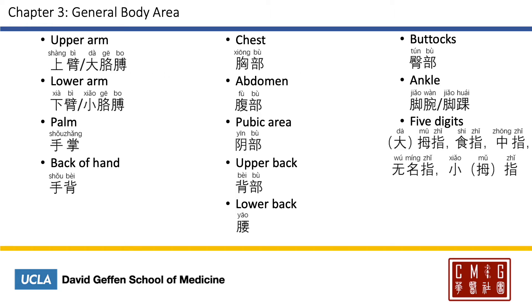Here's a list of general body areas. The upper arm is either called 大胸膊 or 上臂. Lower arm will be 下臂 or 小胸膊; 臂 is the formal term and 胸膊 is colloquial. Palm will be 手掌, and back of the hand 手背. Chest will be 胸部, and abdomen 腹部. The pubic area is 阴部; 阴 meaning dark or shadow. Upper back is 背部, and the lower back 腰. Buttocks will be 臀部, and the ankle 脚腕 or 脚踝.